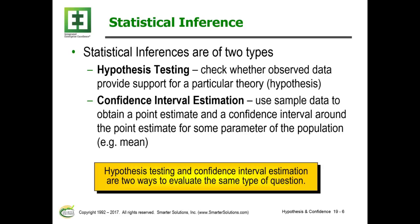A hypothesis checks whether observed data provides support for a particular theory, or what we call a hypothesis. Confidence intervals are somewhat related but different — they use sample data to create a point estimate and then a confidence interval around some parameter, for example, a mean value.